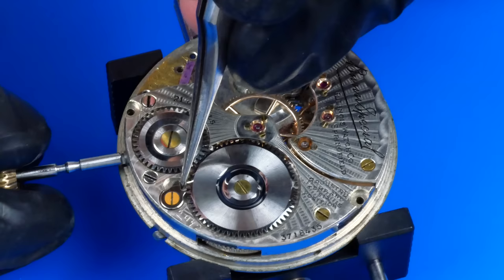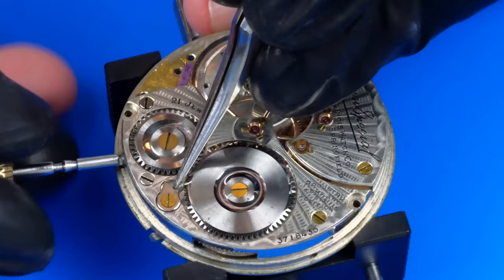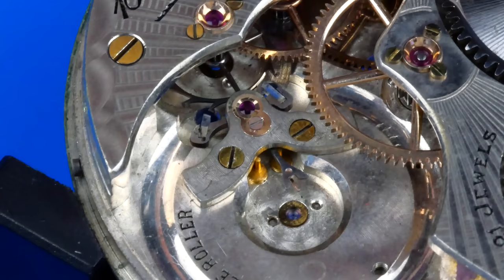The next step before disassembling the train of wheels is to let down the remaining power of the mainspring. By holding back the click, I can allow the spring to unwind itself in a controlled manner using a spare crown and stem. Crown and stem, great name for a bar.